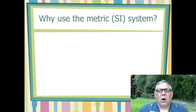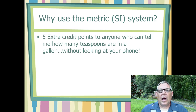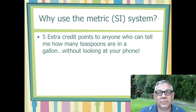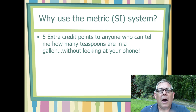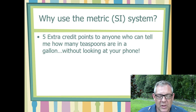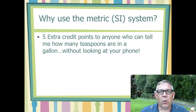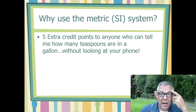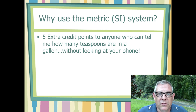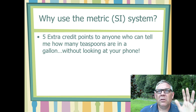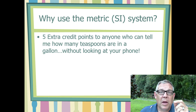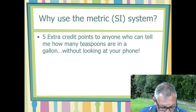So why use the metric system — or the SI system? I'll give you five extra credit points if right now you can tell me how many teaspoons are in a gallon without looking at your phone. You don't know that — I don't know that. It's because our system is so crazy. I don't have this memorized, and it's 768 teaspoons in a gallon. Not only do I not know that, that's a crazy number. That's the system we still use in the United States, and it's an inferior system.